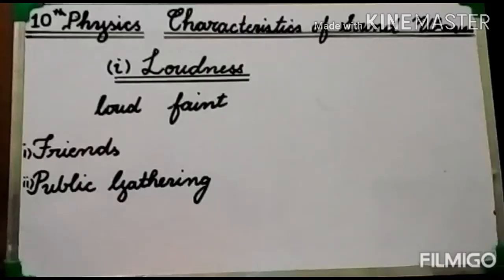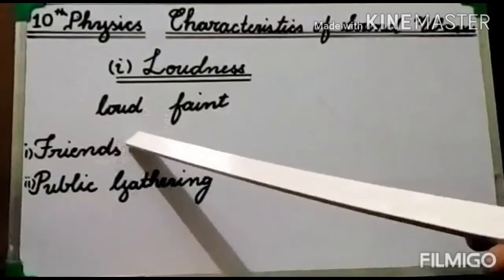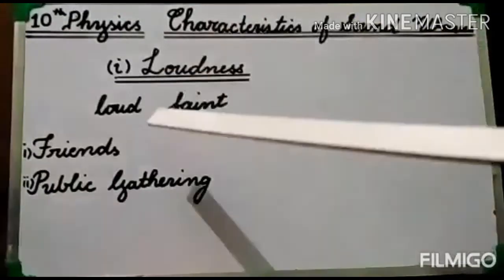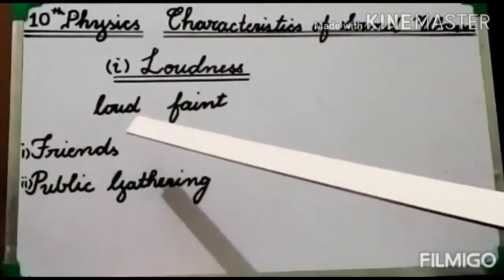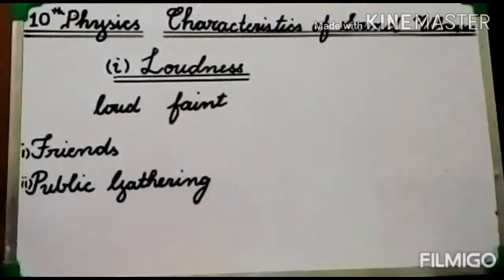Loudness is the characteristic of sound by which we differentiate between loud sound and faint sound. We have to talk in different ways at different places according to the social situation. For example, if you are talking with friends or relatives at home, your voice is low.